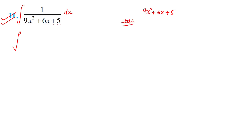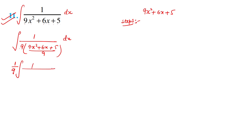The coefficient of x² is 9, so we multiply and divide by 9. Taking 1/9 outside, we get 1/9 ∫1/(x² + (6/9)x + 5/9) dx. Simplifying 6/9 gives 2/3, so inside we have x² + (2/3)x + 5/9. Step 1 is done. In step 2, we take half the coefficient of x, which is half of 2/3, giving us 1/3.